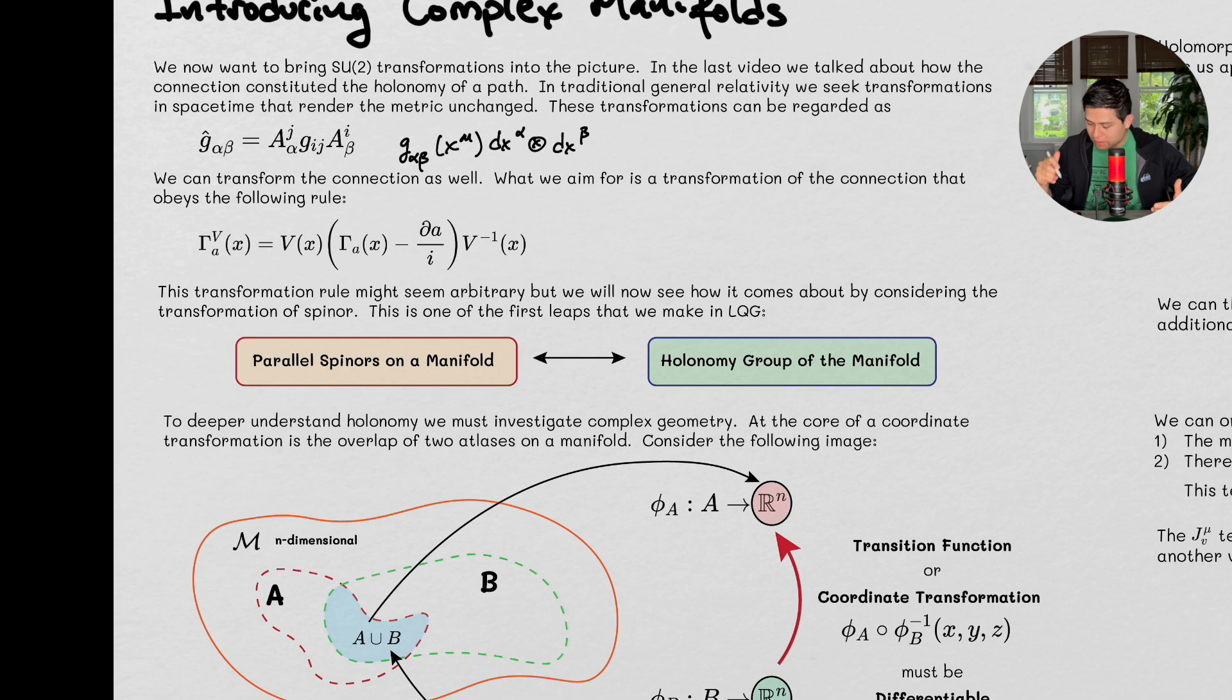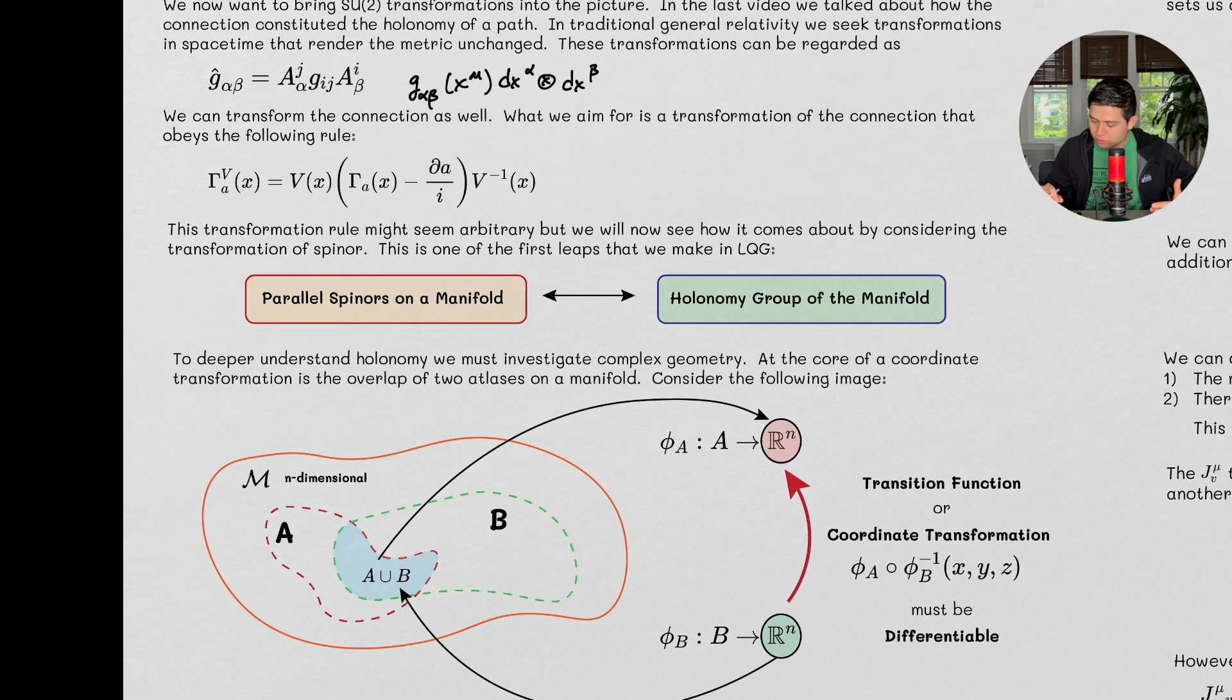So, we're going to put a pin in this for right now, and we're going to start talking about loop quantum, or not loop quantum gravity, we're going to start talking about a little bit of the background of loop quantum gravity, which is the stage, if you will, which is a complex manifold.